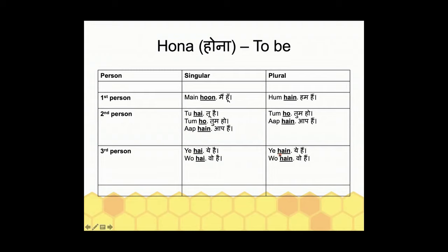For plural, we use 'hain': 'ye hain' means 'these are,' 'wo hain' means 'those are.' If you're a complete beginner, no need to get overwhelmed — this is your first time. Just revise and practice. Learn these pronouns and verb forms and you'll be good to go at least in present tense.